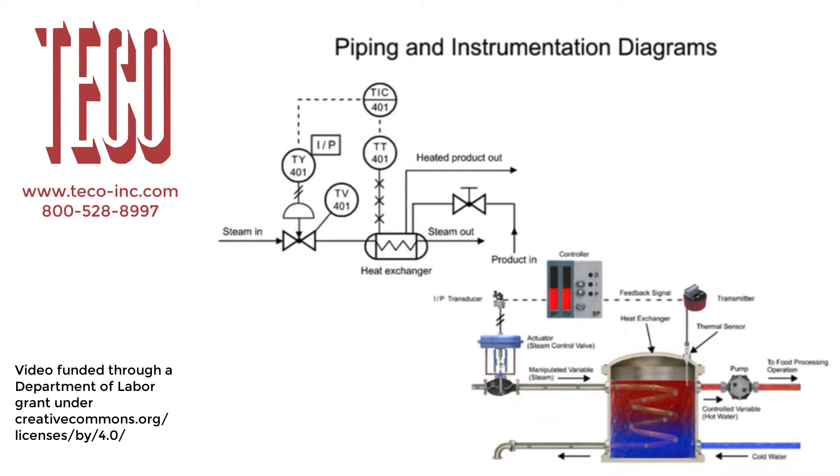To read the control loop, a series of steps are performed. Identification of the control loop is notated by the tag number 401 within the balloons.